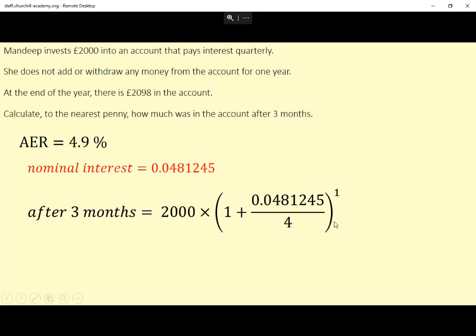And now that we've got that far, the last bit is just typing it into a calculator. Turns out if you type all that in, you get £2,024 and six pence to the nearest penny.